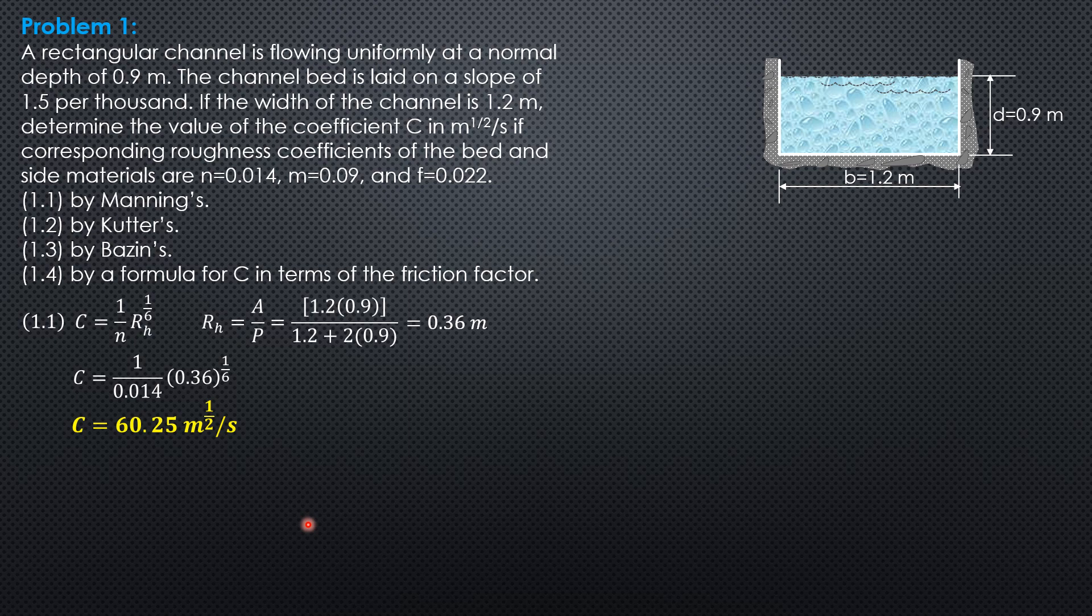By Kutter's C, formula is 1 over N plus 23 plus 0.00155 over slope divided by 1 plus quantity N over square root hydraulic radius times quantity 23 plus 0.00155 over S. These two terms, last two terms are repeated in the denominator. Where the slope is laid 1.5 per thousand. So 1.5 divided by 1,000, so 0.0015.